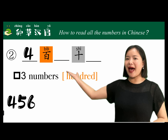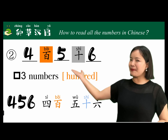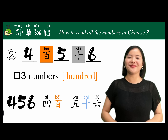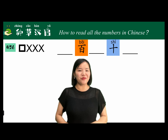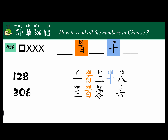For three-digit numbers, for example four hundred and forty-six, we read it as 四百四十六 (sì bǎi sì shí liù). Let's practice more: 128 is read as 一百二十八 (yī bǎi èr shí bā), and 306 is three hundred and six — 三百零六 (sān bǎi líng liù).